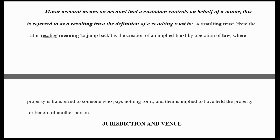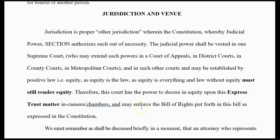If you're coming in and saying that you're doing that, you're now taking control. They don't get to tap into your Social Security account through this court case — you control it. A minor account means an account that a custodian controls on behalf of a minor. This is referred to as a resulting trust — the creation of an implied trust by operation of law, where property is transferred to someone who pays nothing for it and is implied to be held for the benefit of another.